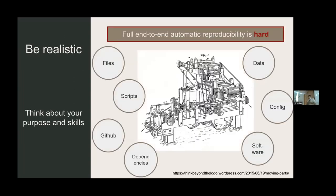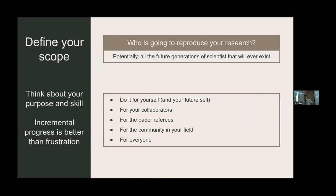There is a big 'but': doing full end-to-end automatic reproducibility is hard. You need to be realistic — it's a complex process with many moving parts. There are files, scripts, data, configuration files, software dependencies, software versions, purpose, and skills. We are scientists, not software engineers. All these things take time. Go step by step, evaluate your own skills, and start applying as much reproducibility as you can.